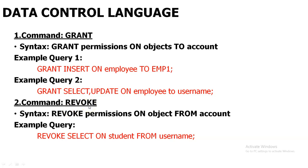The second command is revoke. Revoke is used when you have granted permission to another person to access your table and now you want to take back that permission. The query is 'revoke select on student from username' — or using the employee table. Referring back to query 2, where we gave permission to username for the employee table for select and update, if we now want to revoke select from username, we use 'revoke select on employee from username'. Now this username will be allowed only to update the data and not to view the data — select has been revoked. This covers grant and revoke from data control language, completing TCL and DCL.